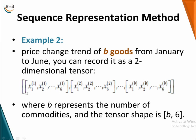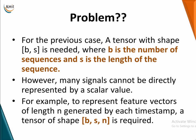The first vector is for the first commodity from January to June. Similarly, the second good from January to June, and so on. When I keep a record of all of these, I get a two-dimensional tensor. Here B represents the number of commodities and the tensor shape is B comma 6. If you generalize, the tensor will be of shape B comma S, where B is the number of sequences and S is the length of the sequence.